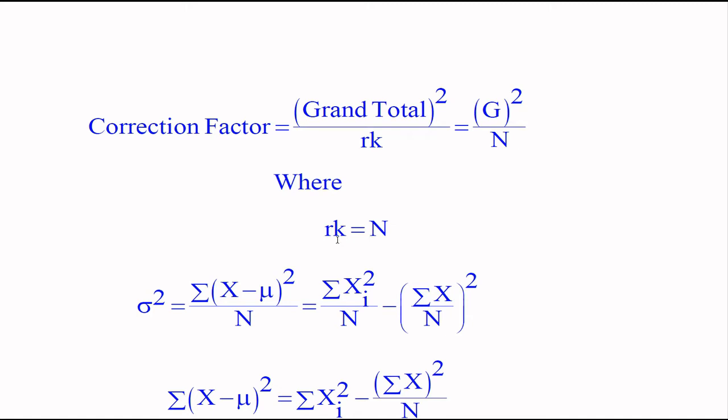Suppose we have 3 treatments and 4 replications, meaning each treatment replicated 3 times. So 4 multiplied by 3 is 12. We have total number of 12 data points in whole experiment.